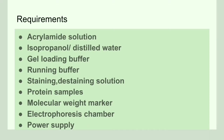We will now discuss about the requirements for polyacrylamide gel electrophoresis. We need an acrylamide solution, distilled water or isopropanol, gel loading buffer, a running buffer, a staining and destaining solution, protein samples, molecular weight markers, an electrophoresis chamber, a power supply, glass plates, a casting frame, a casting stand, and a comb. Where and why these are used will be explained in further slides.